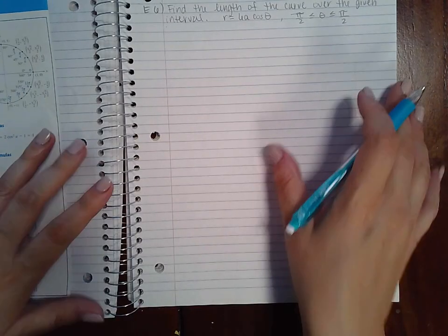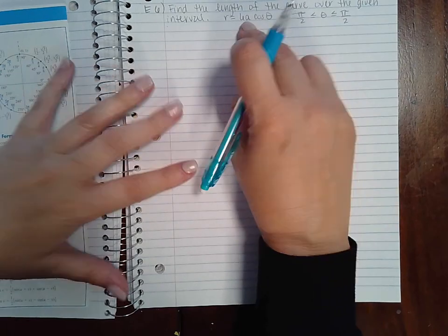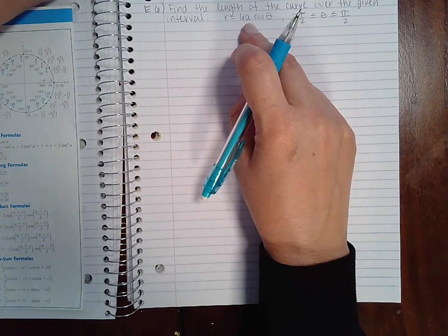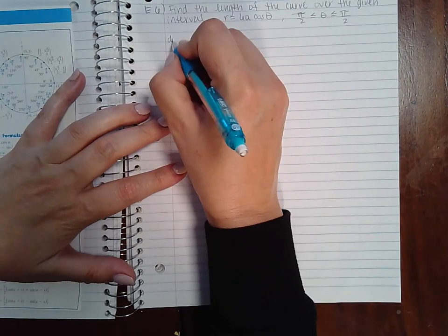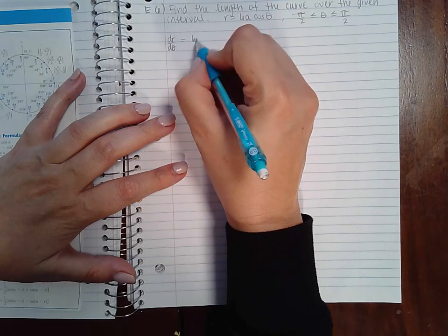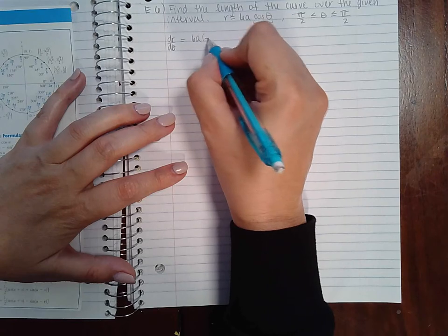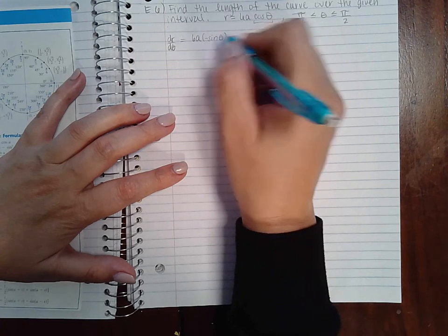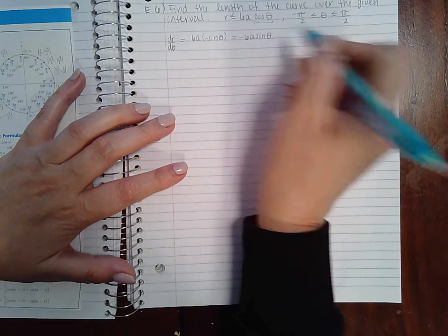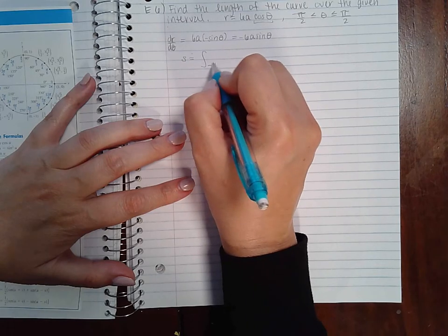Now, if we do the last example, it says find length of the curve over the given interval. So here you have a little extra variable in there. Just remember, it's just like a constant. So if I find dr d theta, theta is my variable. This is just the constant. So six a times the derivative of cosine theta, which is negative sine theta. So you get negative six a sine theta.